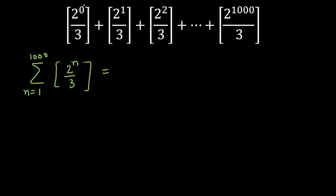As you can see, the powers are odd and even. So out of 2 raised to power n divided by 3, I can create 2 raised to power even and 2 raised to power odd. But before doing that, notice the first term: 2 raised to power 0 is 1, divided by 3 is 1/3, which is a fraction, and GIF of a fraction is 0. So we are going to start with n equal to 1.